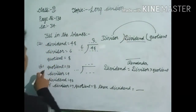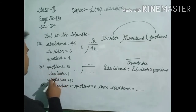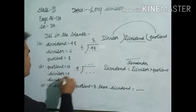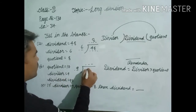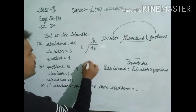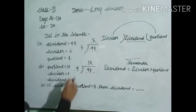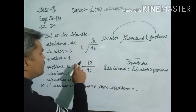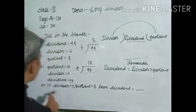Now in question B: divisor is equal to 9, so you must write it. And dividend is equal to 90, and here quotient is equal to 10. So 9 into 90: when you multiply 10 multiplied by 9, you get the dividend.